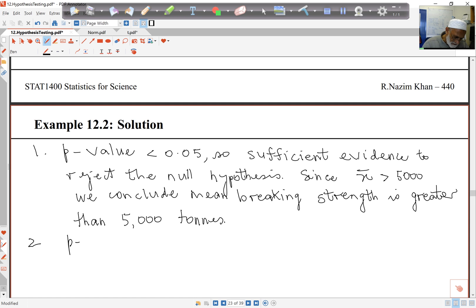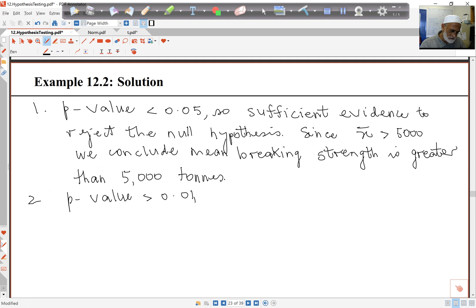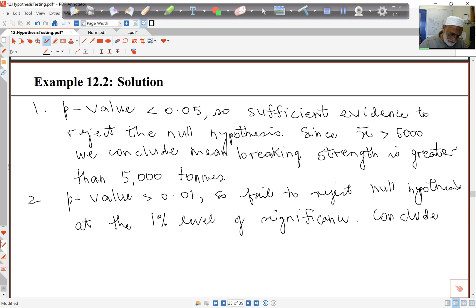If I test the same hypothesis at the 1% level of significance, here the p-value is bigger than 0.01. I've got 0.0136, only just but still bigger than this. So here we will fail to reject H₀ at the 1% level of significance. And so here we will conclude the mean breaking strength is not different from 5,000.